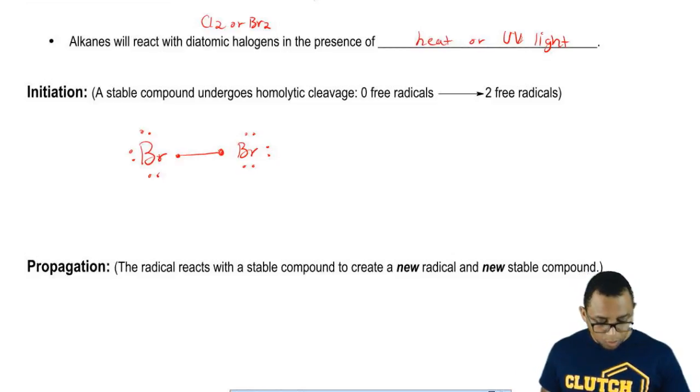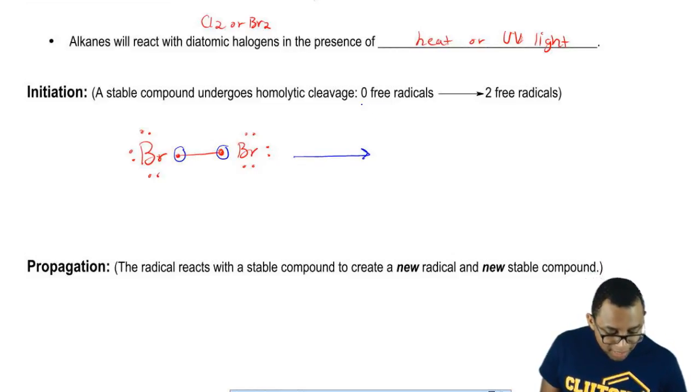Each of them brought to the table one electron. In homolytic cleavage, that bond breaks and each halogen leaves with the electron it came in with. We go from having zero radicals to having two radicals at the end.